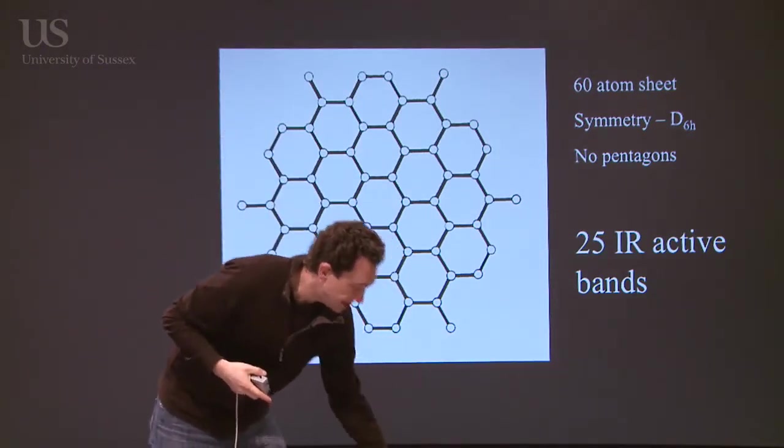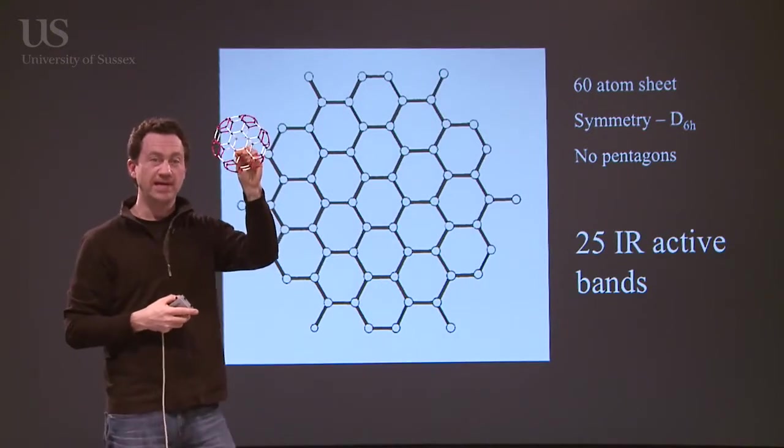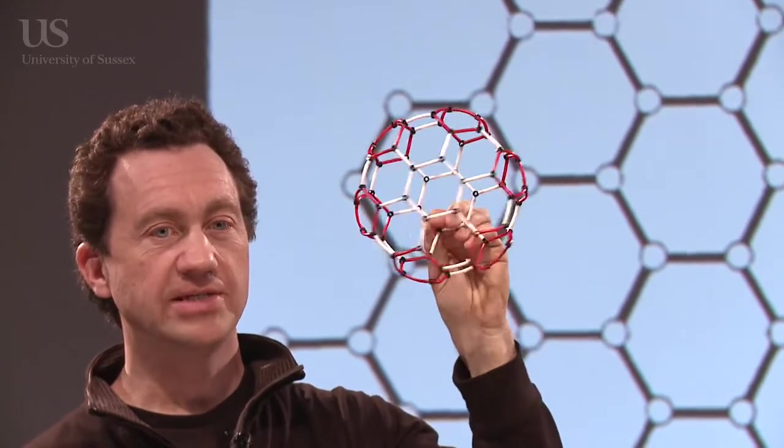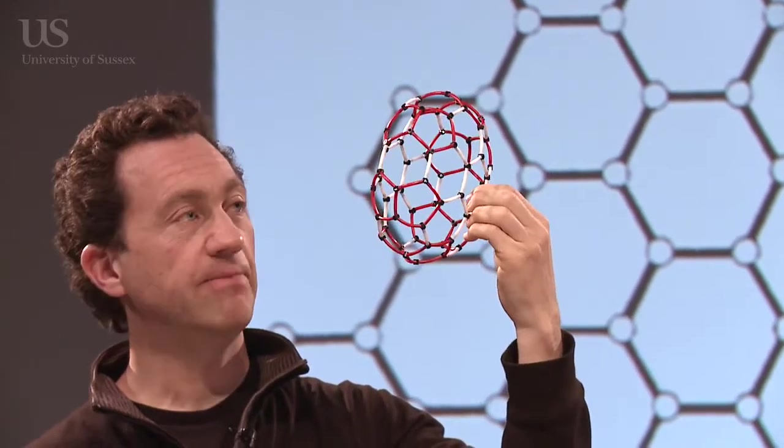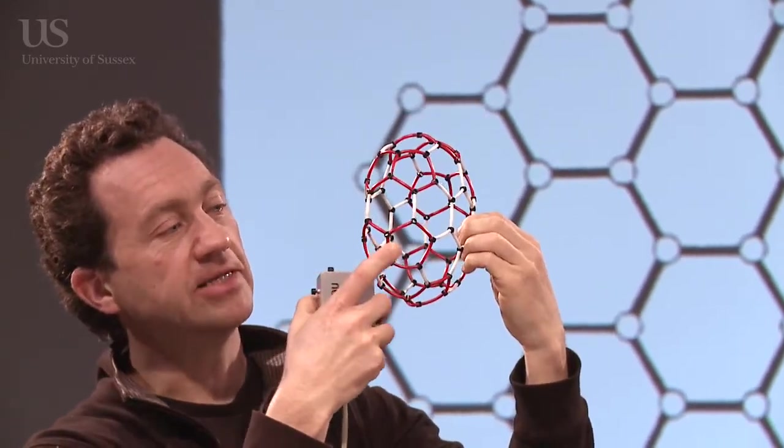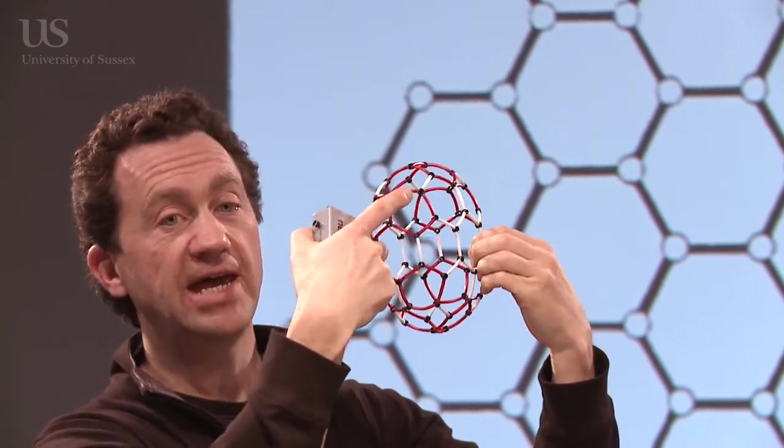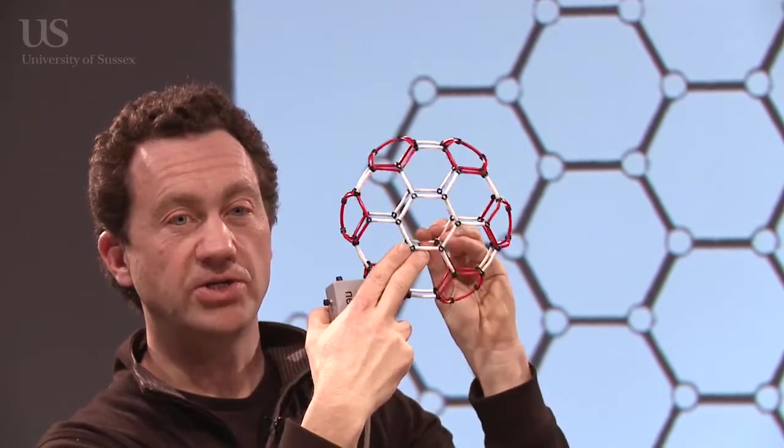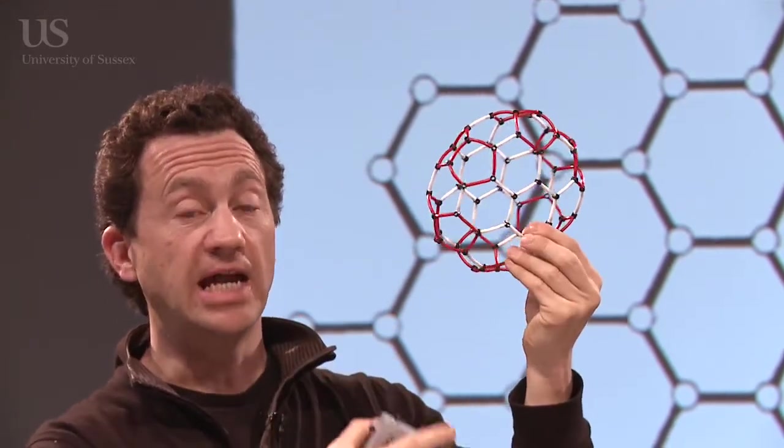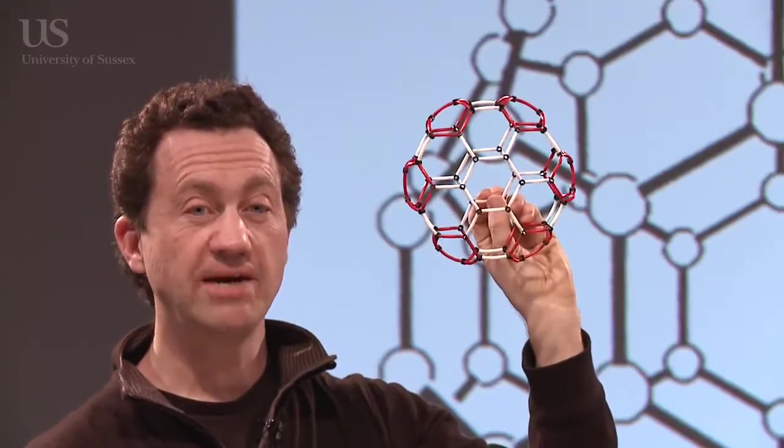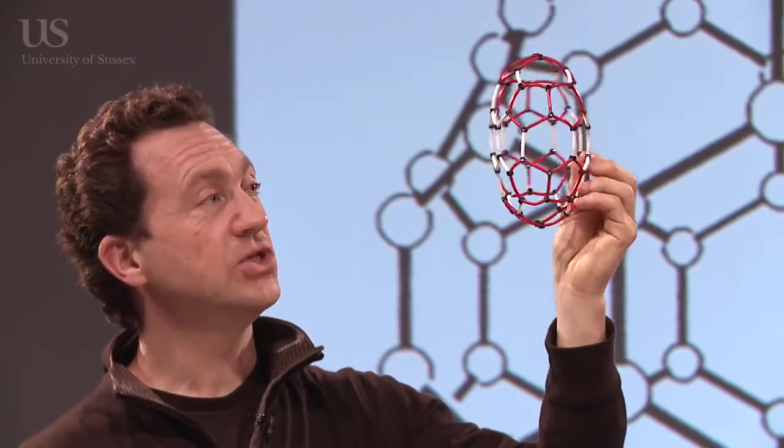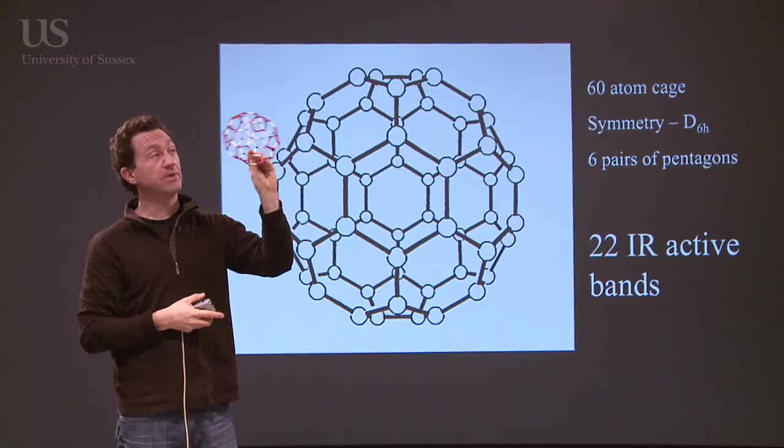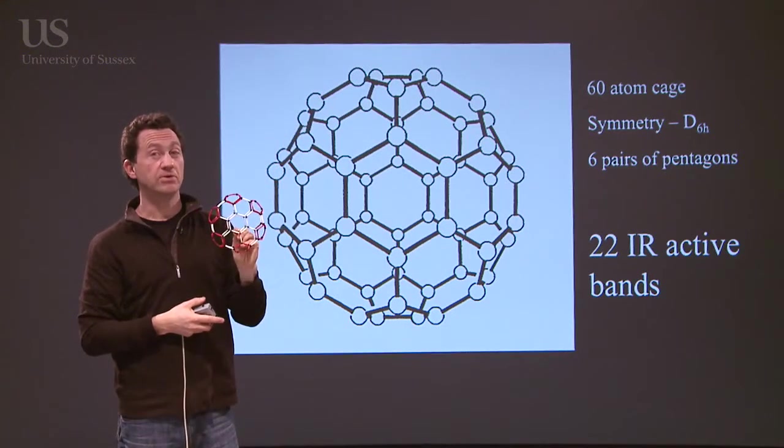The next molecule is this. This looks a little bit like a buckyball, but actually if I show it side on, I think you can see it's not round. It's got sort of like a pin cushion shape. And here, instead of all the pentagons being isolated, the pentagons are in pairs. So this isn't the soccer ball version, but it's got 60 atoms. And if you go through the group theory on this shape, you'll see actually that this should have 22 infrared absorptions. So if you could make this molecule, it would have 22 absorptions.